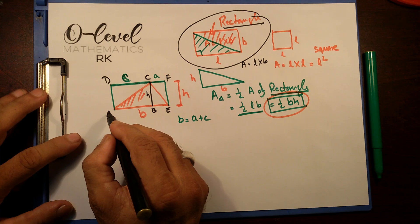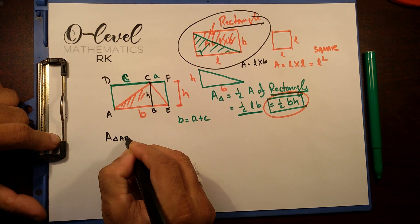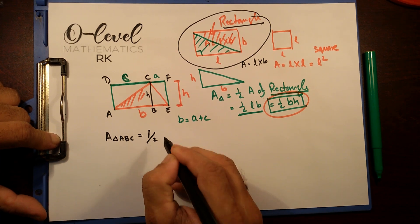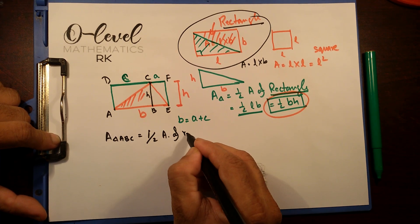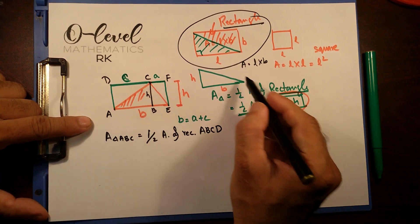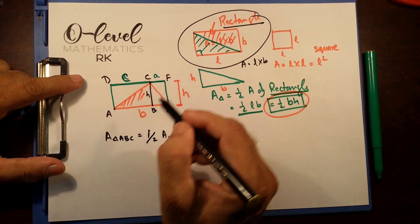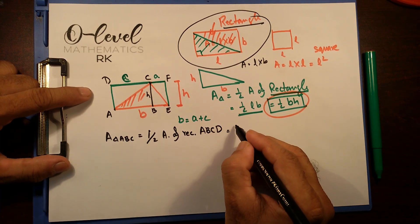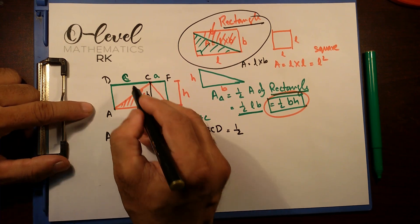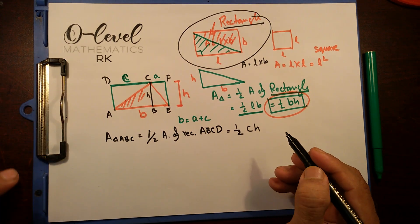Now, look at this triangle A, B, C. Now, area of triangle ABC equals to half the area, half the area of rectangle ABCD. You can see that using this formula, split the rectangle diagonally by half equal parts. So, this is going to be half of that. And area of this rectangle is going to be, see this is C and this is H, C into H.